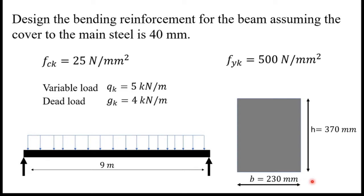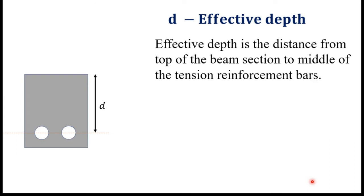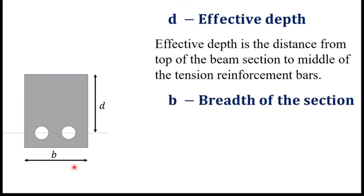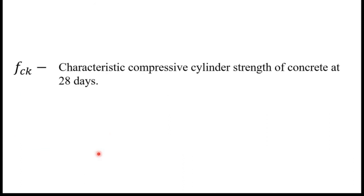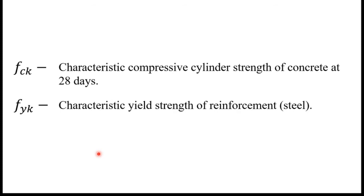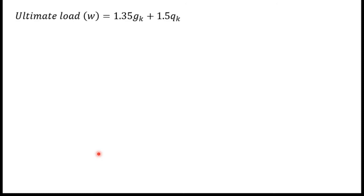First, let's look at the basic meanings of some parameters. d is the effective depth — the distance from the top of the beam section to the middle of the tension reinforcement bar. Breadth is the breadth of the cross-section. Cover is the distance between the exposed concrete surface to the nearest reinforcement bar — all four sides of the section have cover. fck is the characteristic compressive cylinder strength of concrete at 28 days, and fyk is the characteristic yield strength of reinforcement steel.